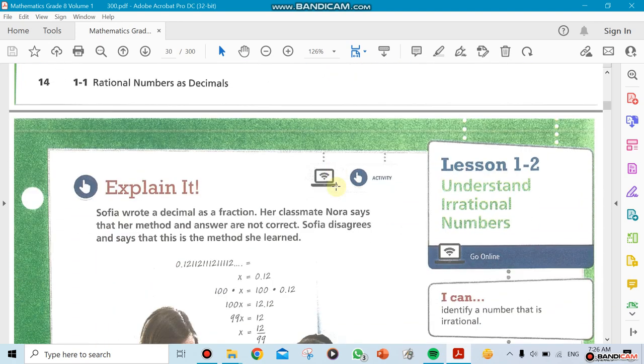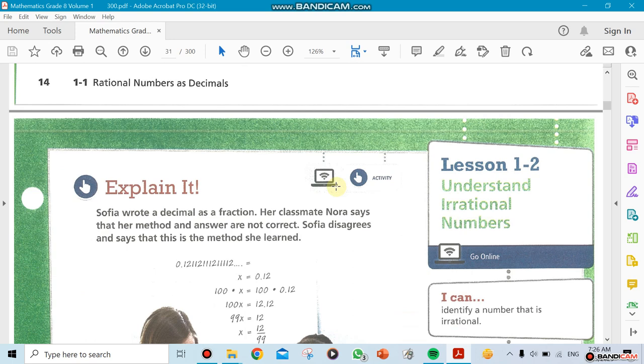But if everything works fine and everybody's in and we understand everything that's going on, we could jump to another section, which is lesson 1.2, understanding irrational numbers. So 1.1 was about rational numbers and 1.2 would be about irrational numbers.